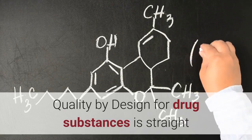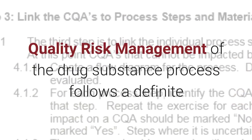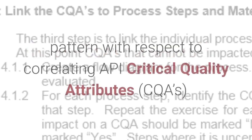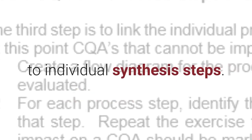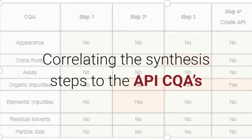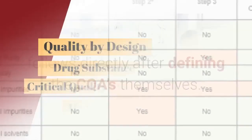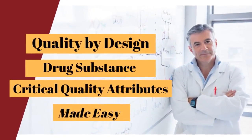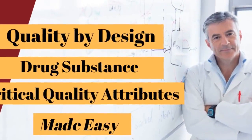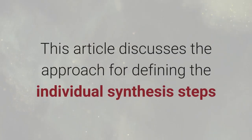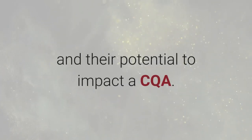Quality by design for drug substances is straightforward early in the risk assessment process. Quality risk management of the drug substance process follows a definite pattern with respect to correlating API critical quality attributes to individual synthesis steps. Correlating the synthesis steps to the API CQAs follows directly after defining the CQAs themselves. Discussion on defining the drug substance CQAs is found in the video 'Quality by Design Drug Substance Critical Quality Attributes Made Easy.' This article discusses the approach for defining the individual synthesis steps and their potential to impact a CQA.